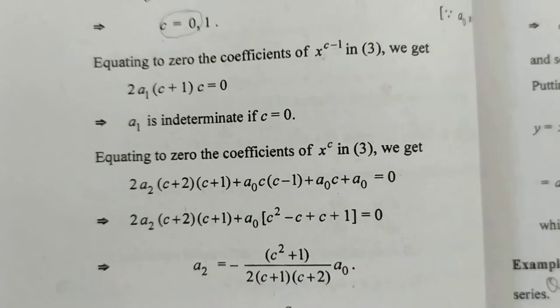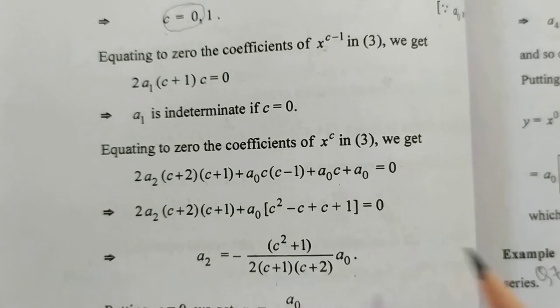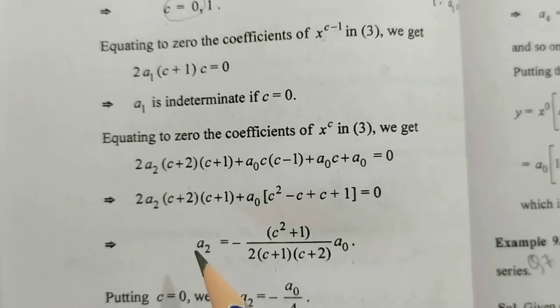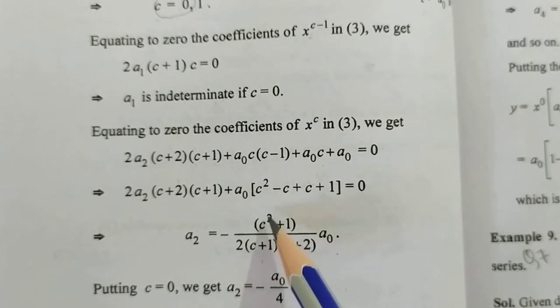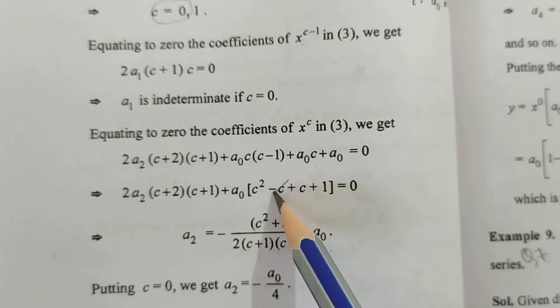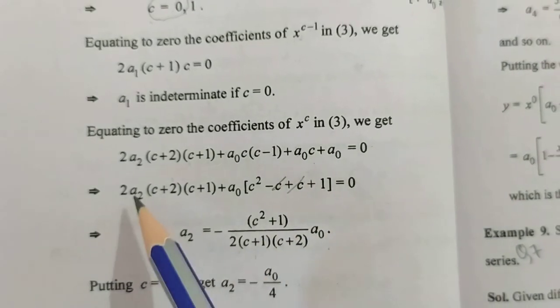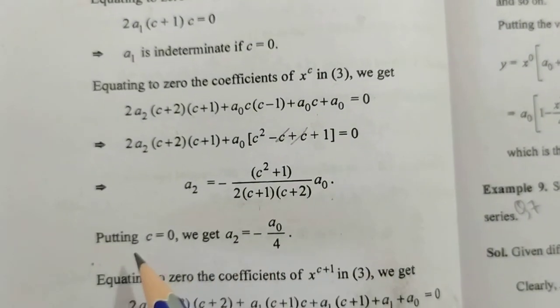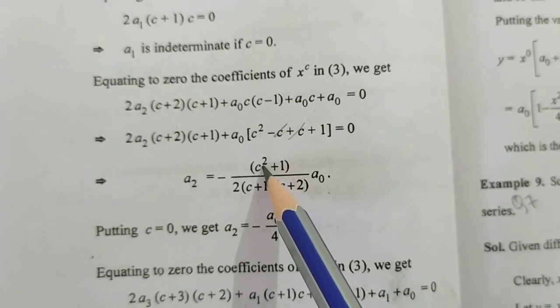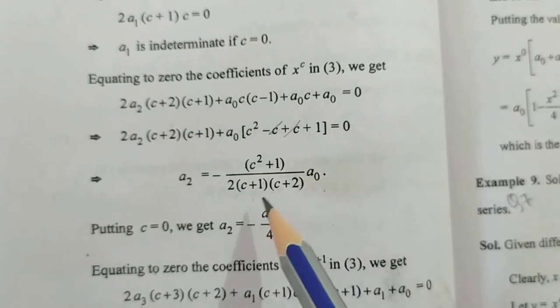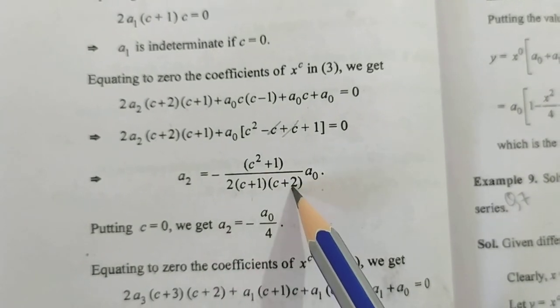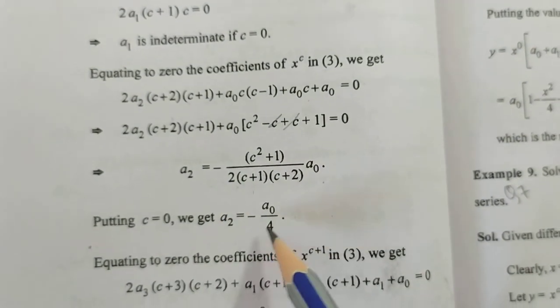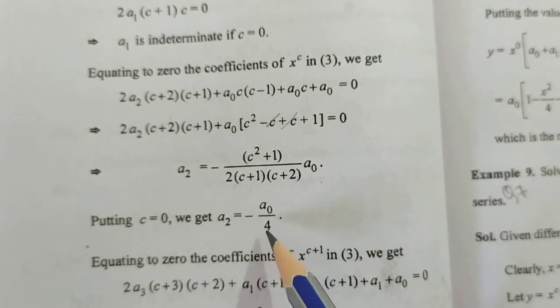Equating to zero the coefficient of x^c in equation 3, we get a₂ = -(c²+1)/[2(c+1)(c+2)]a₀. Putting c = 0, we get a₂ = a₀/(2×1×2), so a₂ = a₀/4.